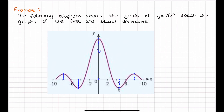We need to look at where the function is increasing and decreasing. Before the first maximum point, the function is increasing, then decreasing after. So our derivative graph needs to be above the x-axis before that point and then below after. At the next minimum point, the function is decreasing as it comes to that point and then increasing. So before that minimum, the derivative is below the x-axis, and then above — changing to positive at the turning point.